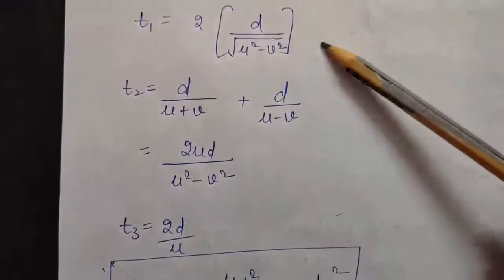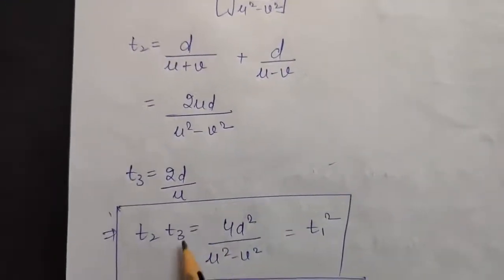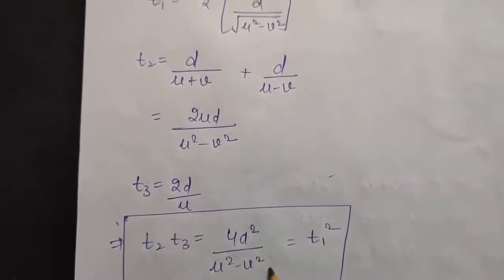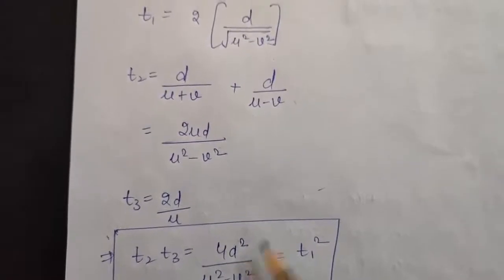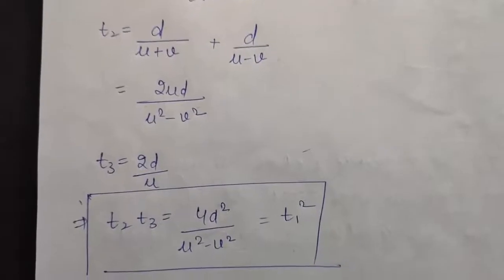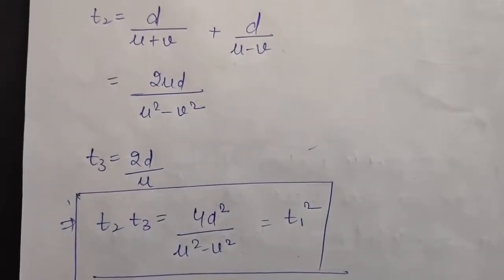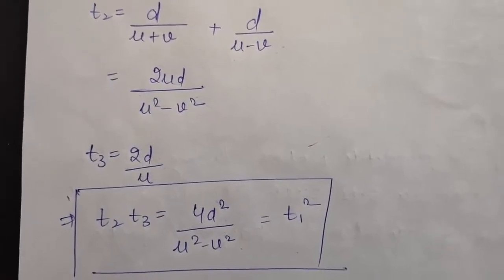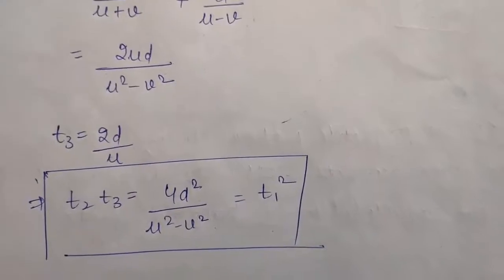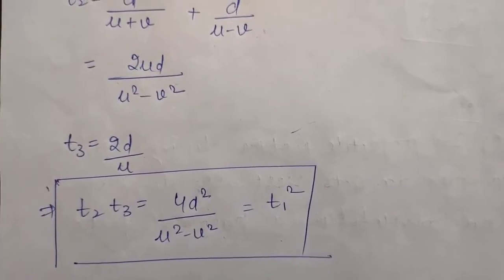Now you know t1, t2, and t3. Calculate t2 · t3 by multiplying them: you get 4d² / (u² − v²). Compare this with t1² which is also 4d² / (u² − v²). This is nothing but t1². Hence it is proved that t2 · t3 = t1². This was the solution of your assignment. Go through the solutions properly and prepare well for the test tomorrow. Thank you.